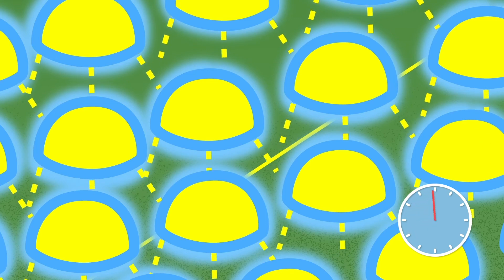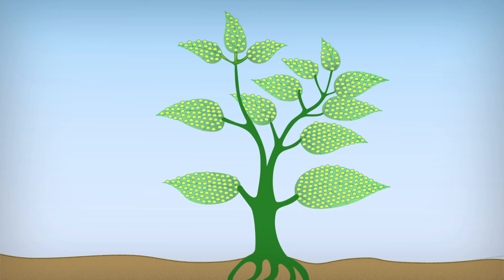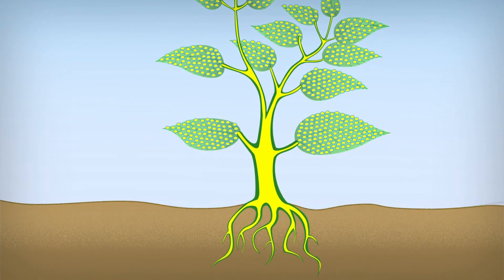Once the pesticide has entered the leaf, Ampersand keeps working by delivering the active deep into the veins of the leaf and, for systemics, down into the root.